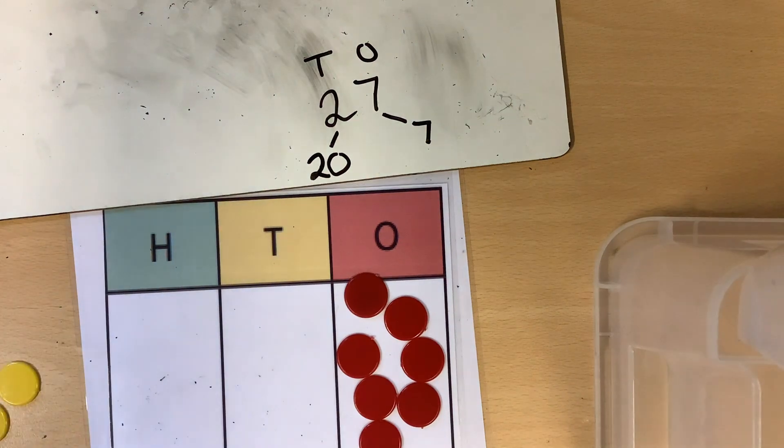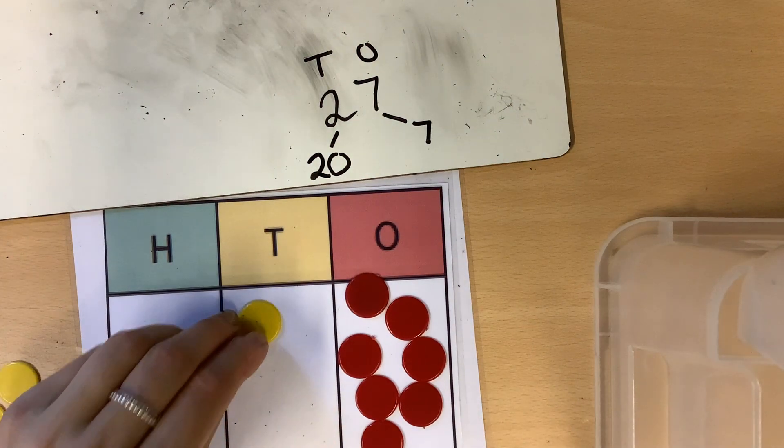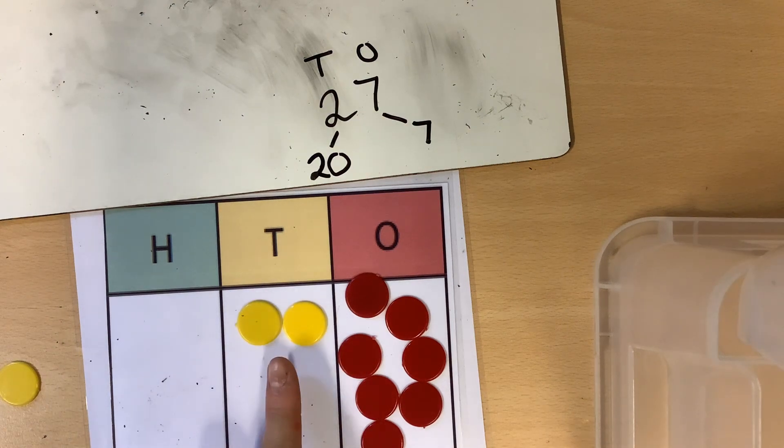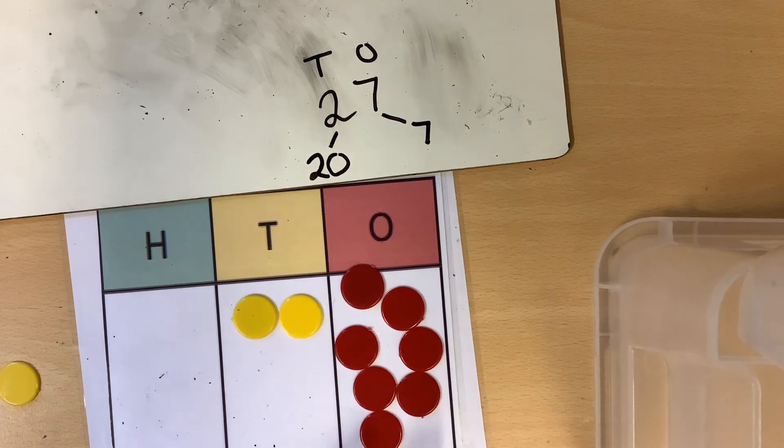And I'm going to do my 2 tens, my 20. 10, 20. So I've now made 7, 20, 7.